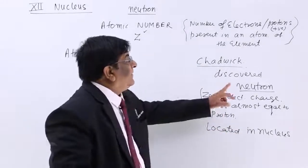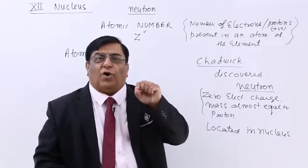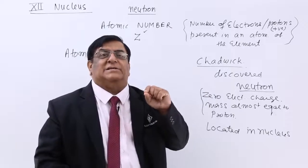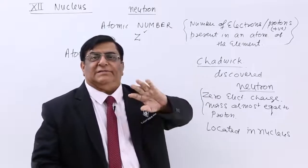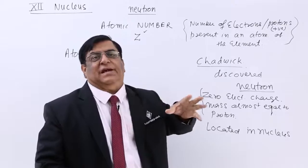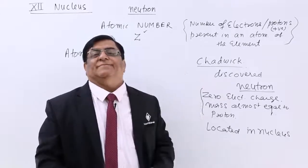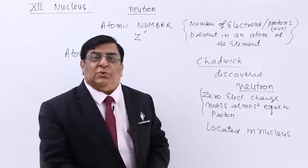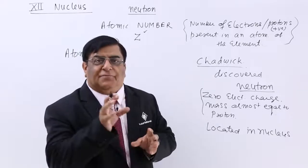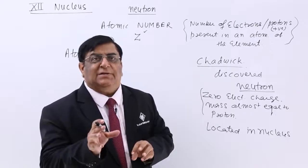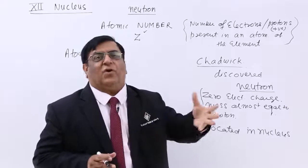Now, if a neutron is located in the nucleus, it will not increase the charge of the nucleus or the atom, but it will increase the mass only. This is how the riddle of different mass with the same charge is solved.